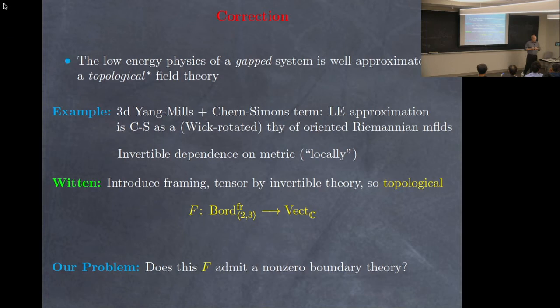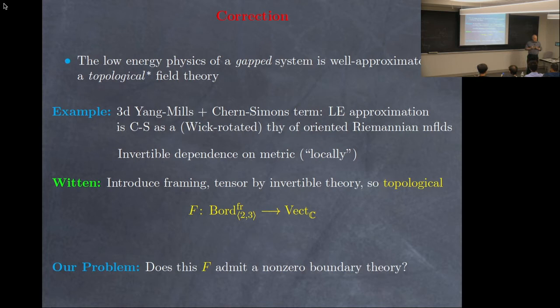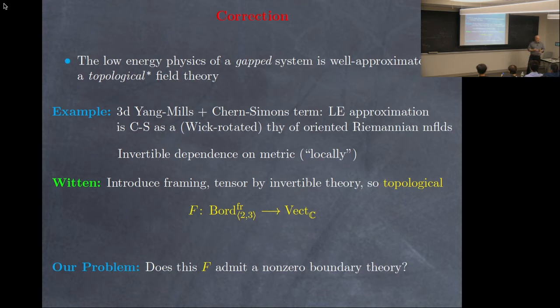The theory you tensor with is a theory whose partition function on a 3-manifold is an exponentiated Chern-Simons invariant with a coefficient that's not defined unless you put on a framing — that Chern-Simons invariant is not defined without a framing. So it's a theory of framed Riemannian manifolds. But the dependence on the Riemannian metric and that invertible theory cancel out, and in the end you get a topological theory, no matter what.